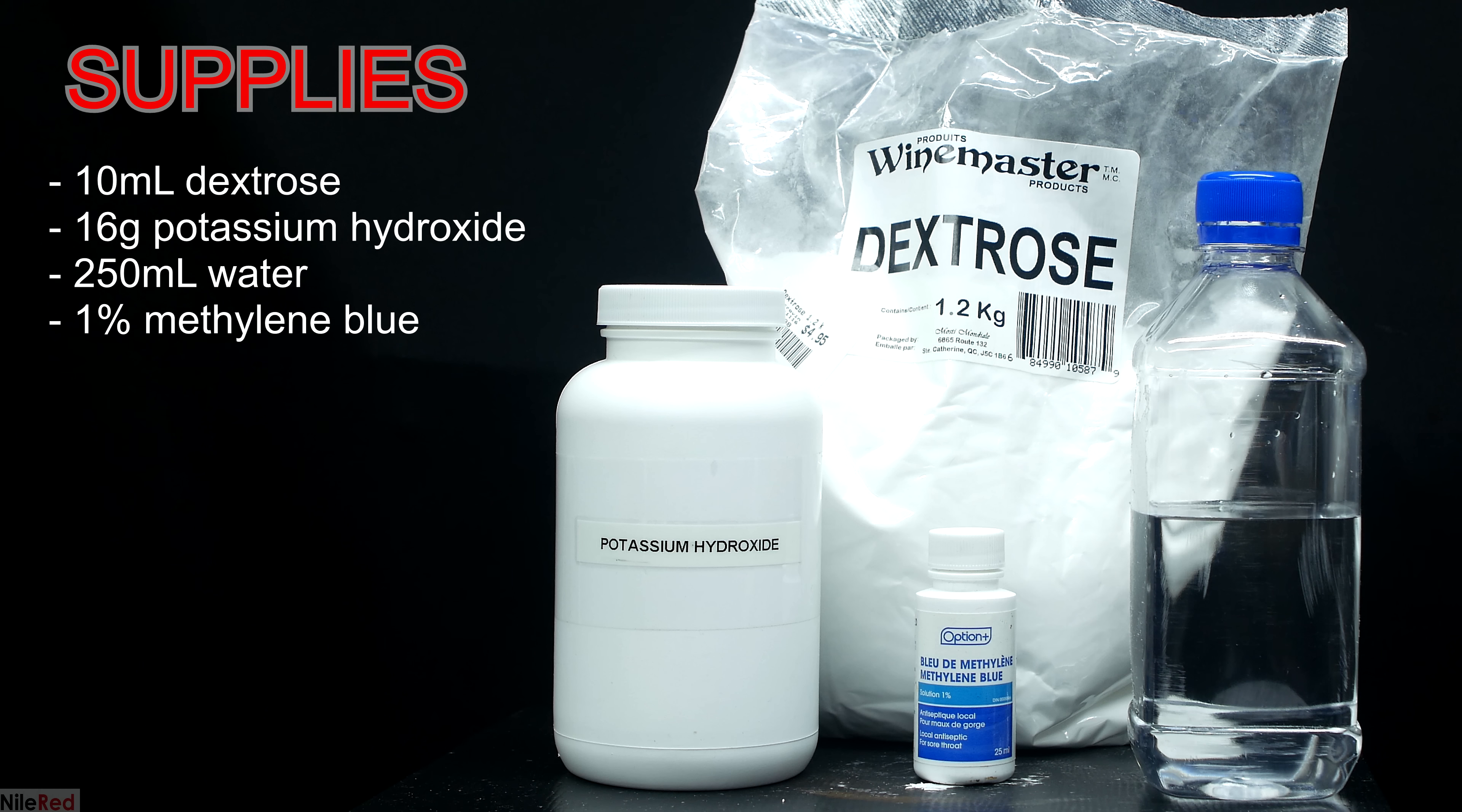In terms of supplies I use 10 milliliters of dextrose, 16 grams of potassium hydroxide, 250 milliliters of distilled water, and a few drops of 1% methylene blue solution. The methylene blue solution is probably the most exotic thing here but it was easily purchased from my local pharmacy. I bought the potassium hydroxide from eBay and the dextrose was from a local winemaking store.